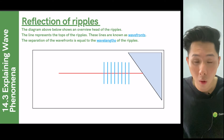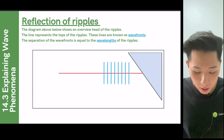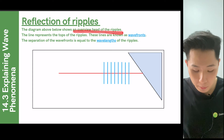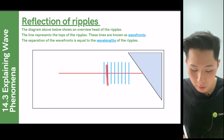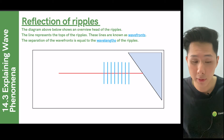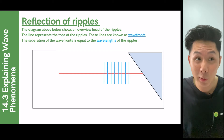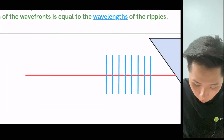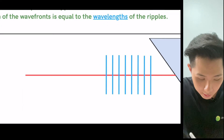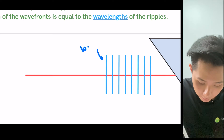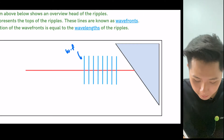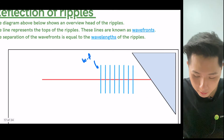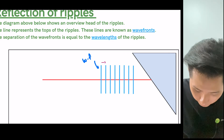Let's look at how to draw water ripples on a diagram. This type of diagram shows an overhead view of ripples. The lines represent the tops of the ripples and are known as wavefronts. Just note that the distance between each wavefront is the wavelength.